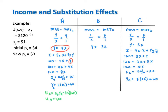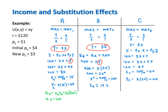That means the utils the consumer derives from bundle B equal the utils from bundle A. Since utility equals X times Y, for bundle A, utility equals 15 times 60, or 900 utils. Bundle B must also give 900 utils, so 900 must equal X times Y. Substituting Y equals 3X into the utility function gives 900 equals 3X squared, which means X at bundle B is approximately 17.3. And since Y equals 3X, Y at bundle B is approximately 51.9.